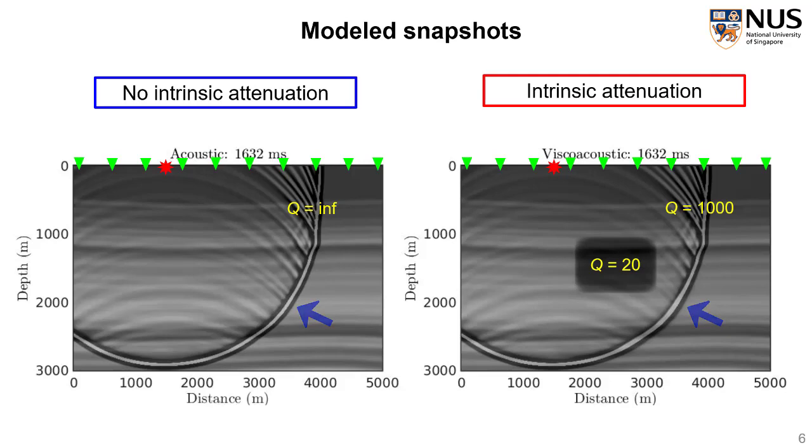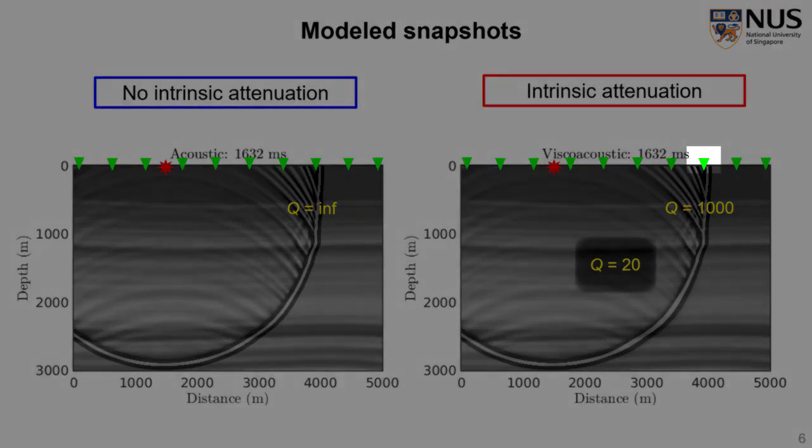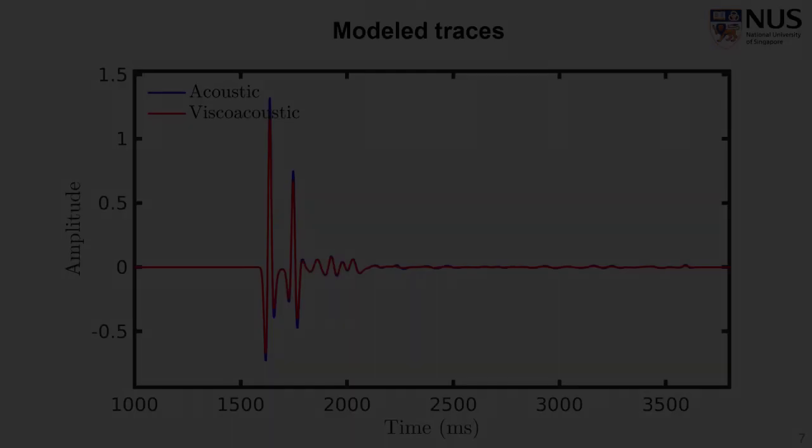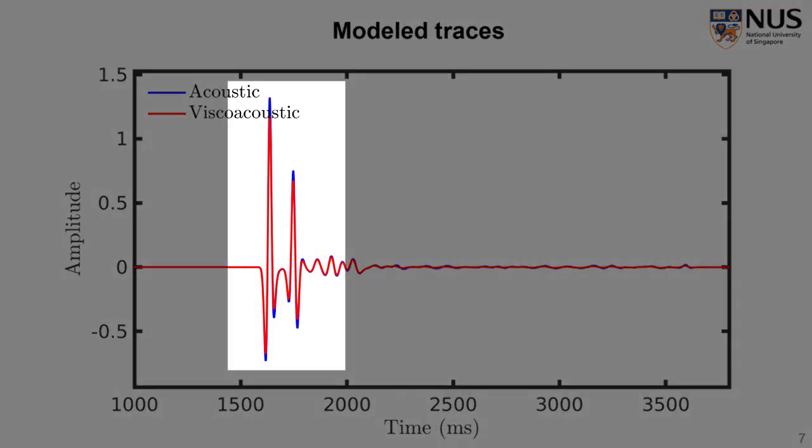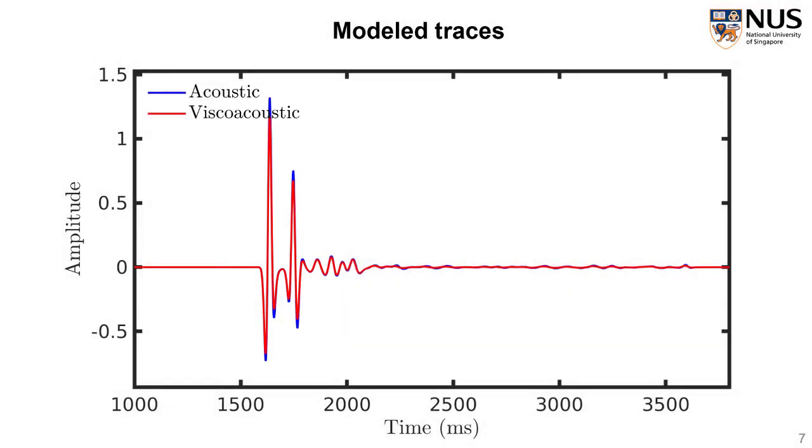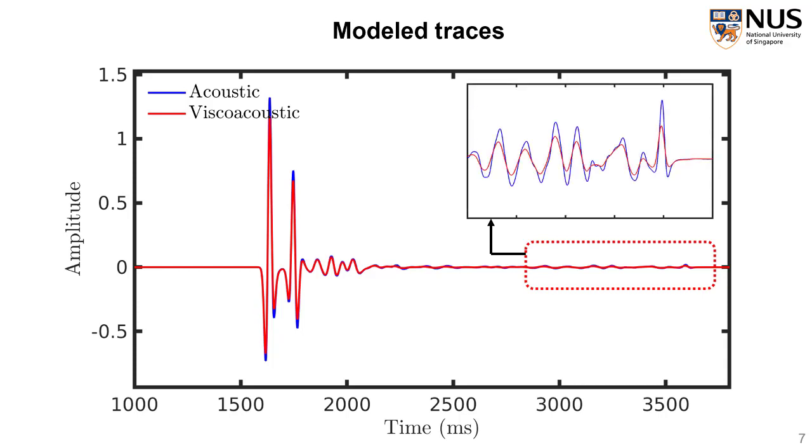We have seen the impact of the low Q anomaly caused on the wave field. To further validate this effect, we have checked this trace recorded at this receiver. We can see there are some subtle difference at the early travel time. When the travel time becomes larger, attenuation effect has become more and more obvious. We can see there are obvious high frequency loss and also some phase distortion in the attenuated waveform.